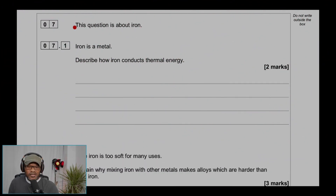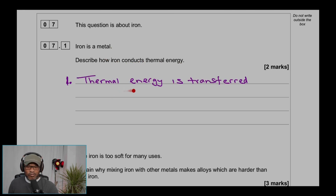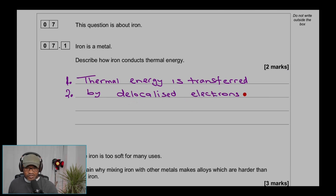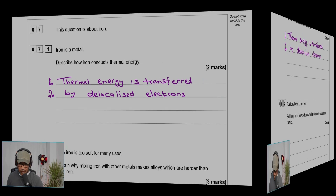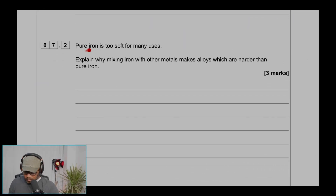Question 7.1 is about iron. Describe how iron conducts thermal energy. Thermal energy is transferred by delocalized electrons in the valence shell. The valence shell is the outer shell. The electrons in the outer shell are called valence electrons — also called delocalized electrons because they are free to move.